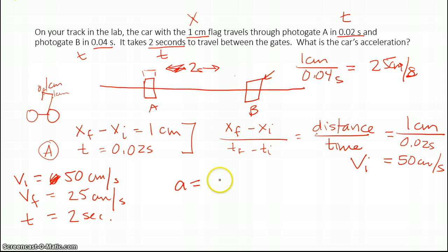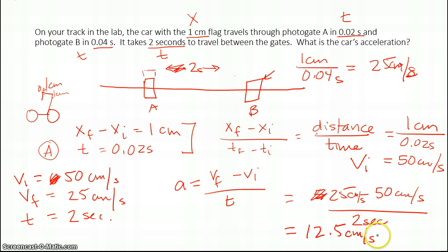What is the acceleration? I know acceleration is Vf minus Vi over T. Let's plug in the numbers. That means that is 25 centimeters minus 50 centimeters per second over 2 seconds. And if I do the calculations there, that should work out to be the value of 12.5 centimeters per second squared. We'll try one more.